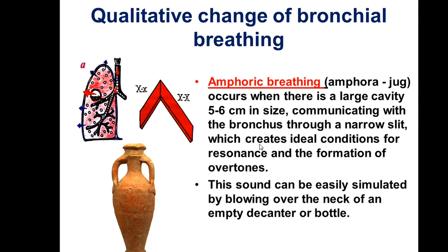Quantitative changes of bronchial breathing include several types. Amphoric breathing is one type of bronchial breathing, occurring when there is a large cavity of 5–6 cm in size communicating with the bronchus through a narrow passage, creating ideal conditions for resonance and the formation of overtones. This sound can be easily simulated by blowing over the neck of an empty decanter or bottle.